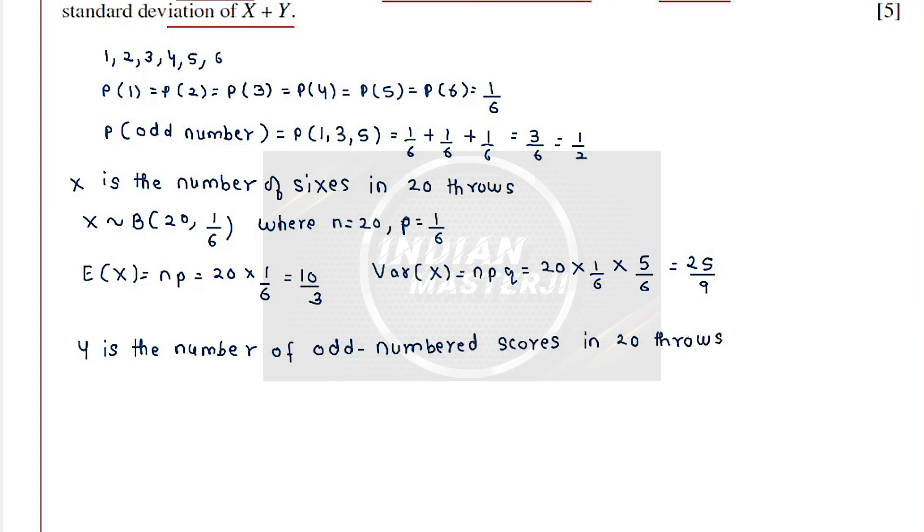We just saw that the probability of odd number scores is half each time the throw is been made. So again we can say that Y follows binomial distribution because probability of success is fixed here. Y follows binomial distribution with the parameters 20, 1 by 2, where n is equal to 20 and p is equal to half.